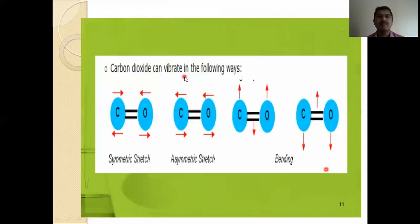Carbon dioxide can vibrate in the following ways. You can see here carbon dioxide, carbon double bond oxygen. Here, both are contraction. Both are relaxation. That is symmetric stretch. These are asymmetric stretch. One is here, stretch. One is left side. One is right side. These types also stretch here. One is below. One is above. That is the bending vibrations.